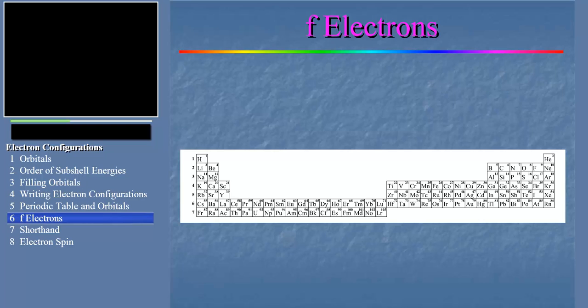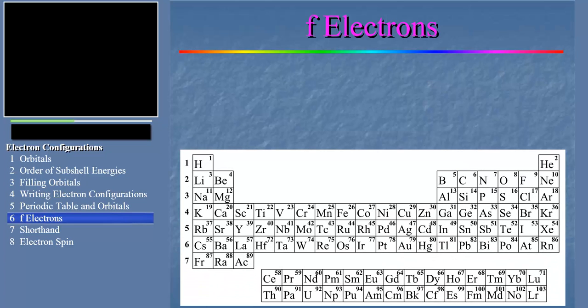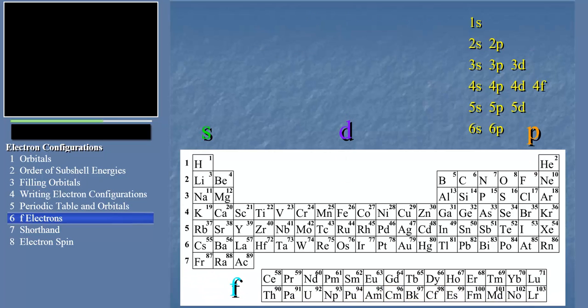So typically, these f elements are shuttled down under the others, and everyone just remembers that they fit in just after lanthanum, element 57, and actinium, element 89. That, in fact, is why the first row of these elements is called the lanthanides, and the second row, which fits just after actinium, is called the actinides. So when we're following the order of electrons filling, they follow this pattern, which mimics the pattern we see in the mnemonic device we learned earlier.